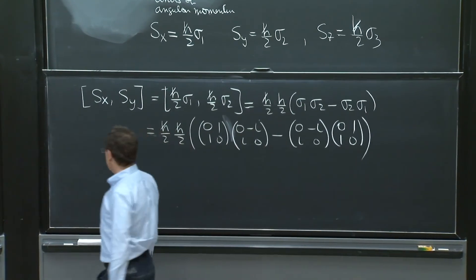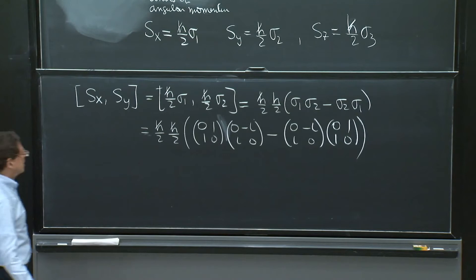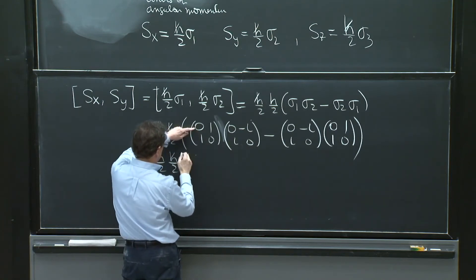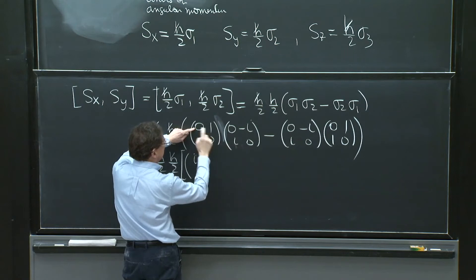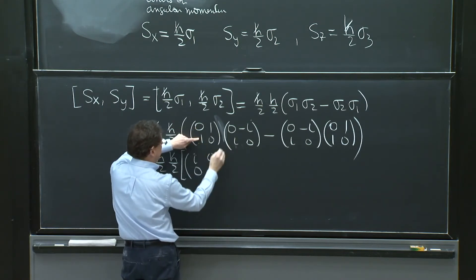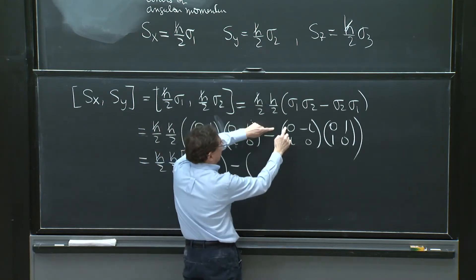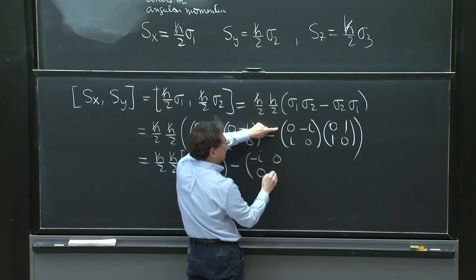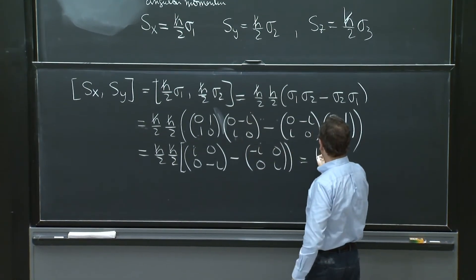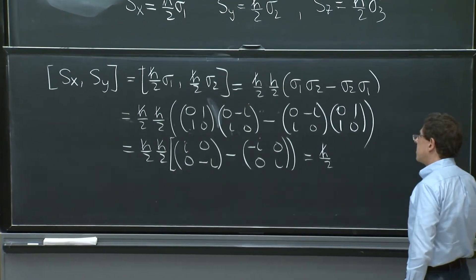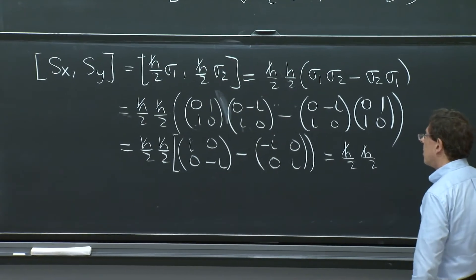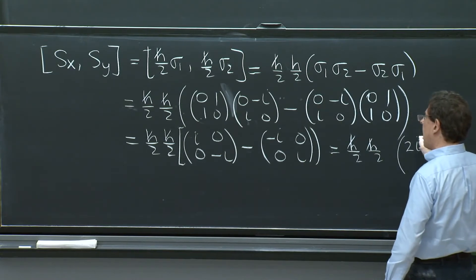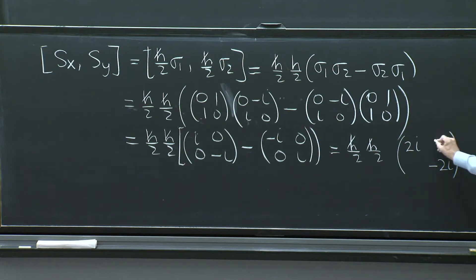So you would have H bar over 2 sigma 1 with H bar over 2 sigma 2 and it's equal to H bar over 2 sigma 1 sigma 2 minus sigma 2 sigma 1. So it's H bar over 2 times H bar over 2. And let's do this. Sigma 1 is 0, 1, 1, 0. Sigma 2 is 0 minus i, i 0 minus 0 minus i, i 0, 0, 1, 1, 0. I have to do all that arithmetic. Happily, this is not that bad. Let's see if I don't make mistakes. Okay, here I get an i from the first, a 0 here, a 0, and a minus i here, minus. And minus i, a 0, a 0, and an i.